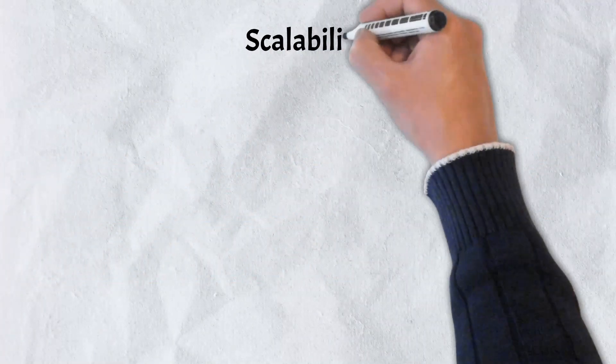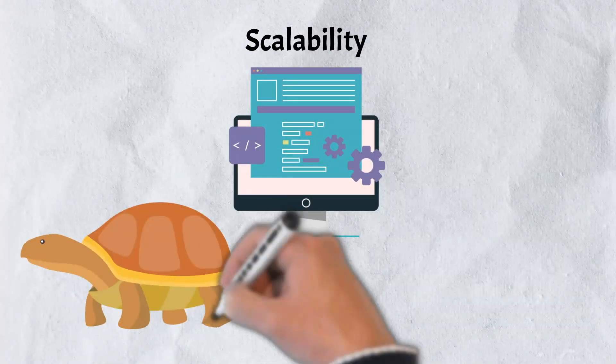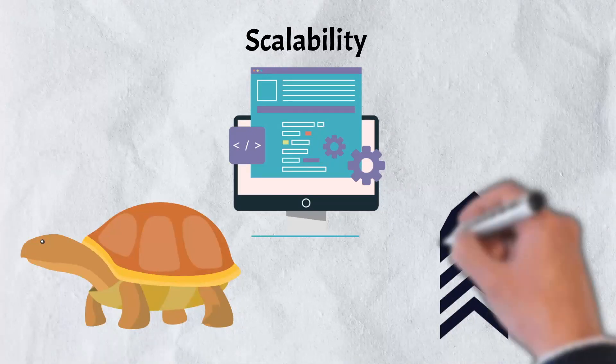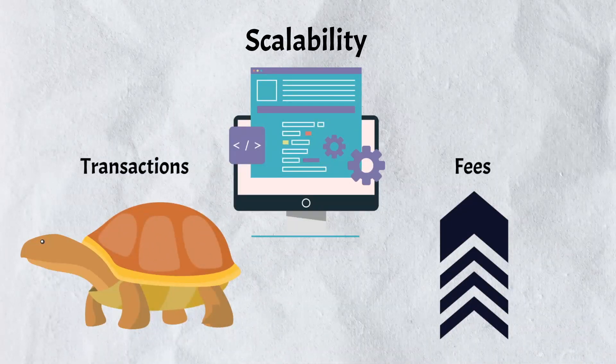Scalability also becomes an issue. Data congestion is common on DeFi platforms that undergo high periods of network traffic. Transactions are slowed and network fees rise as a result of these obstacles.